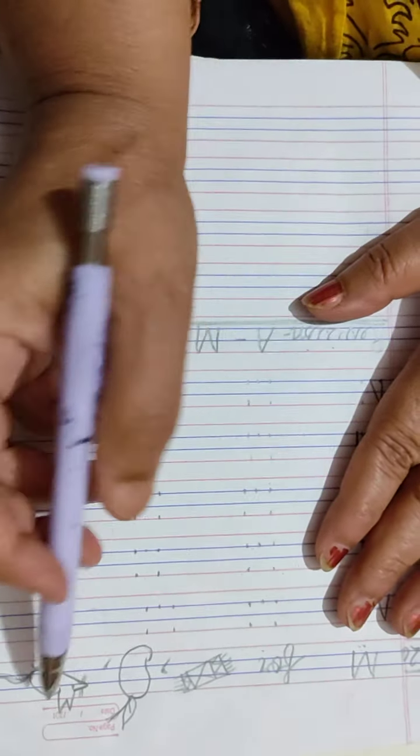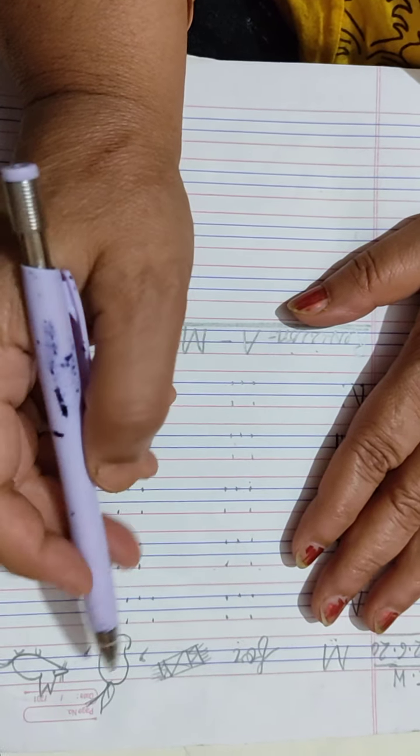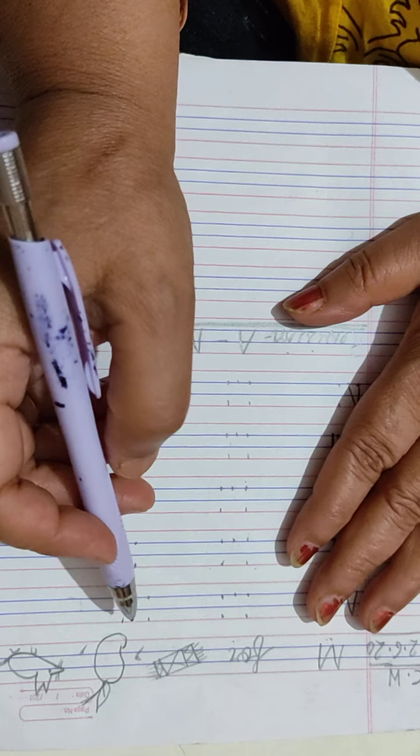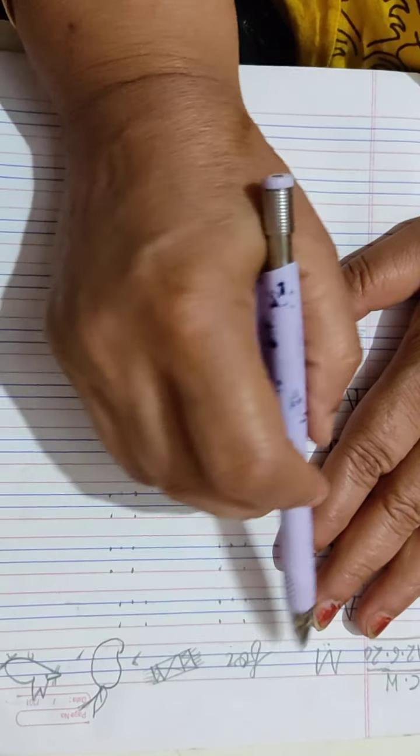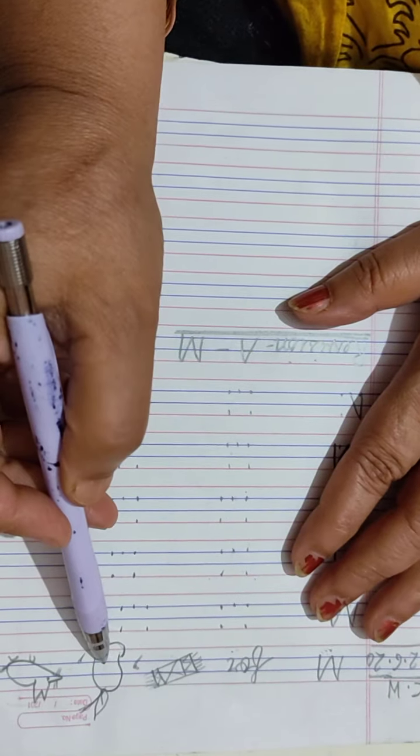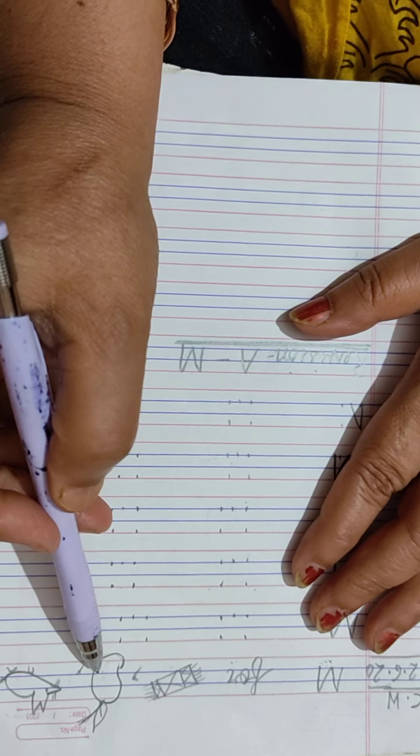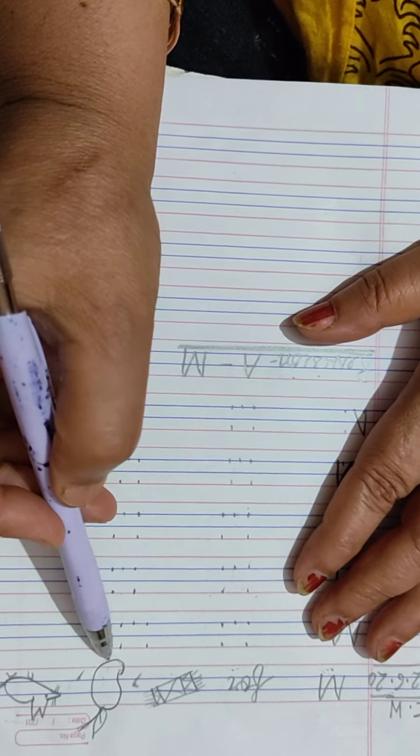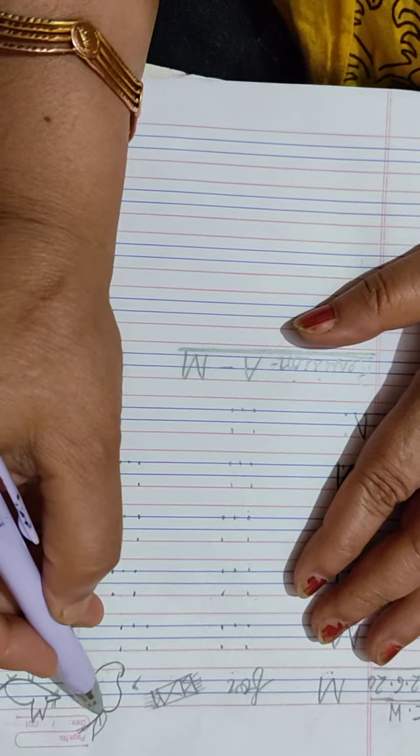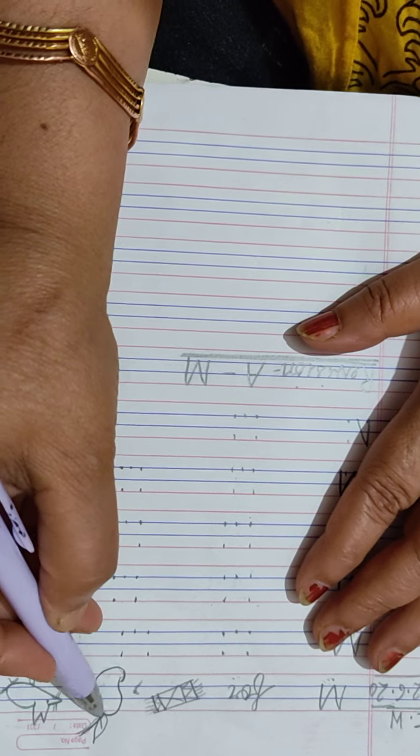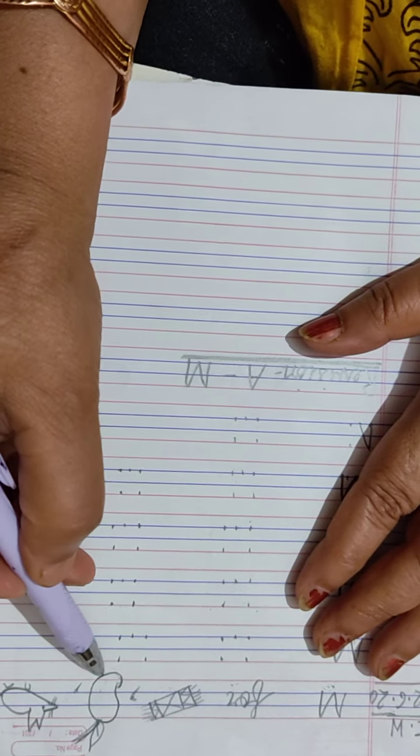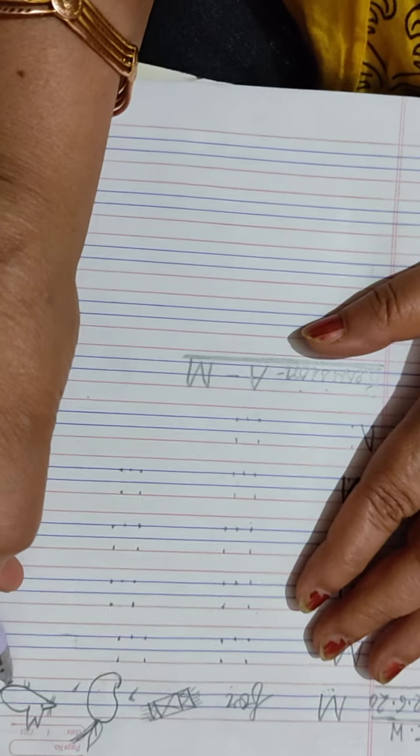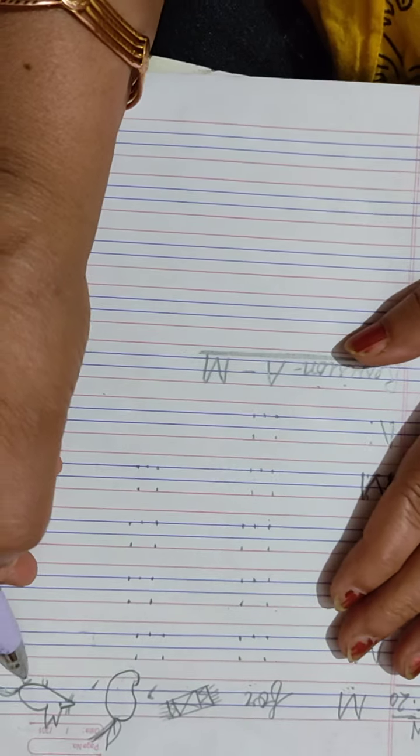Now, today I will teach you letter M. M for Matt, M for Mango. Do you like Mango? Say yes. Mango is the king of the fruit. Yes. M for Mouse.